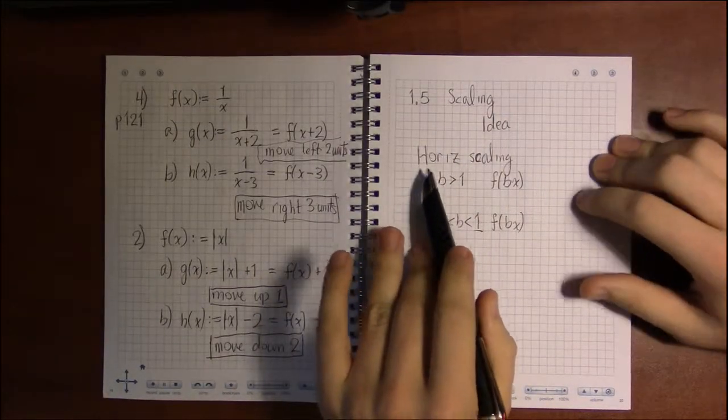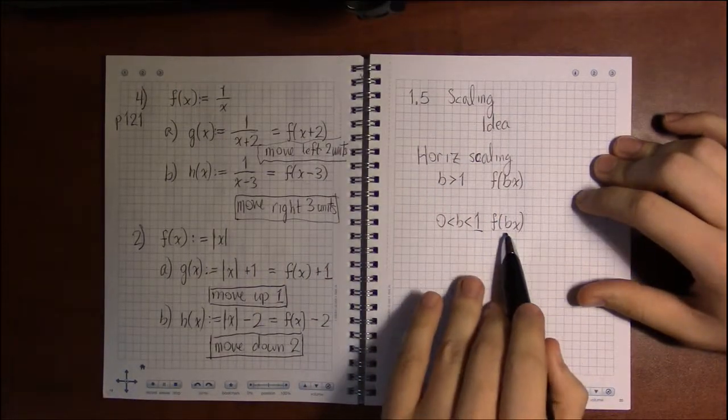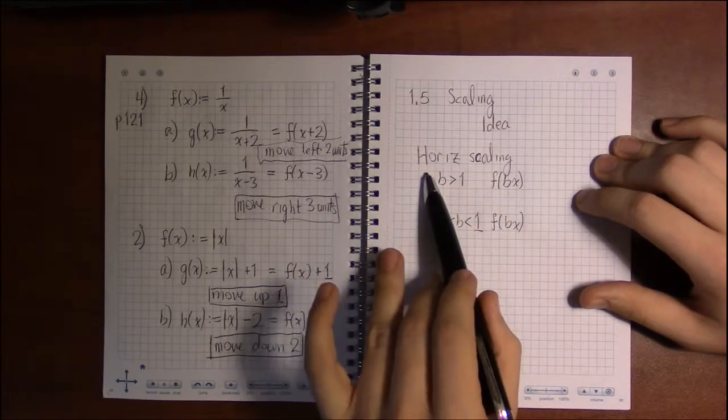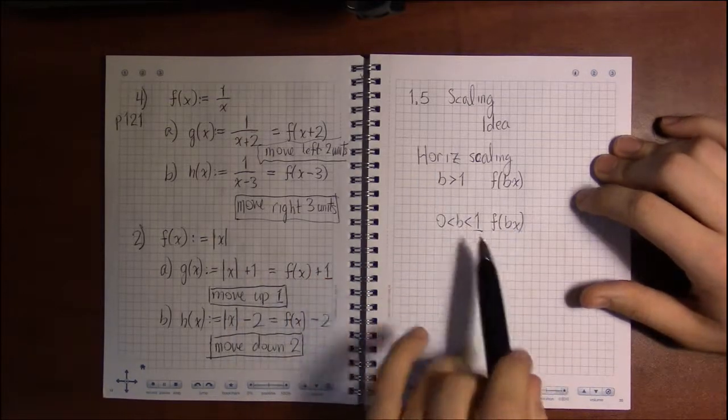Now, horizontal, again, is going to be close to the x coordinate. It's going to be close to the x, and it's also going to be backwards.